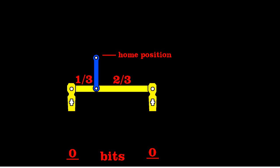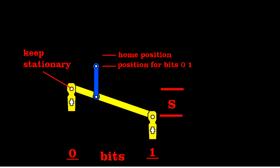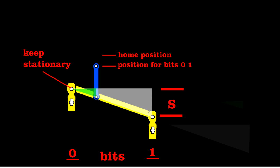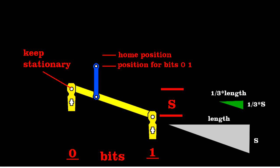To encode bits zero-one, you keep this pivot fixed and pull this tab with a stroke of length s. You move the blue bar a distance of one-third s. You can determine that using similar triangles. We'll call the distance the blue bar moved D. That's position one.